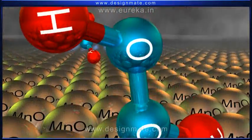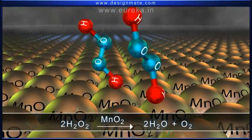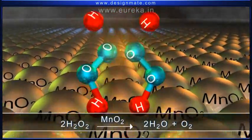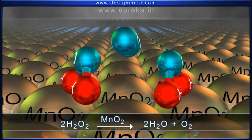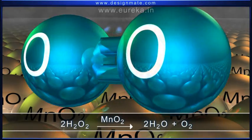Summary. Thus, two molecules of hydrogen peroxide, in the presence of a catalyst, manganese dioxide, give two molecules of water and release a molecule of oxygen.